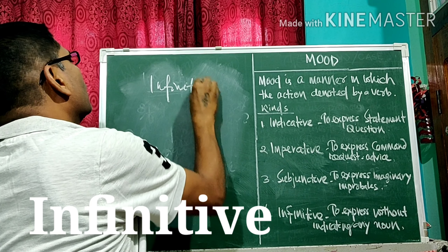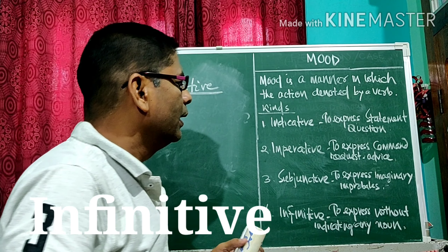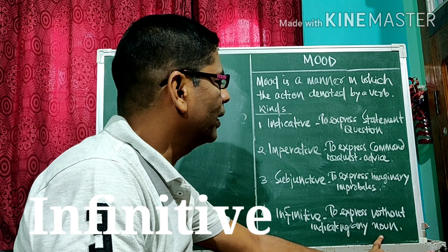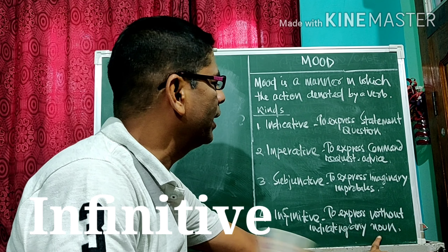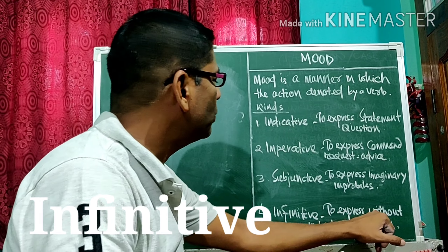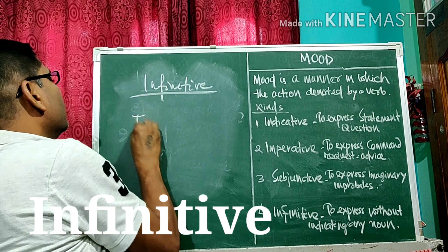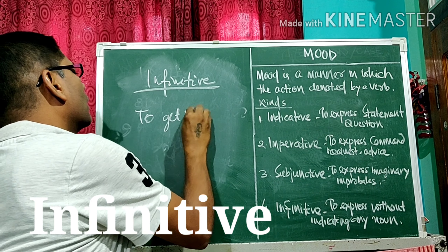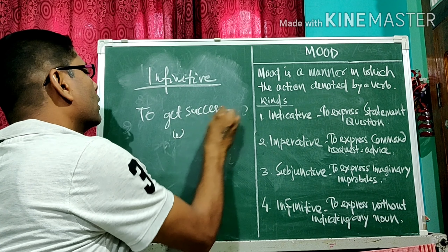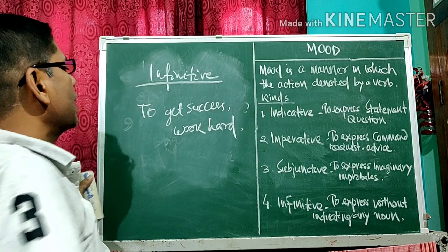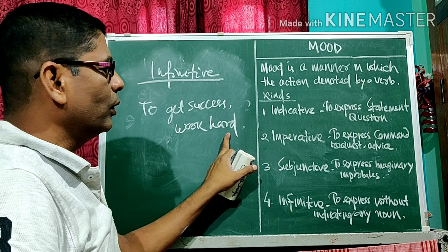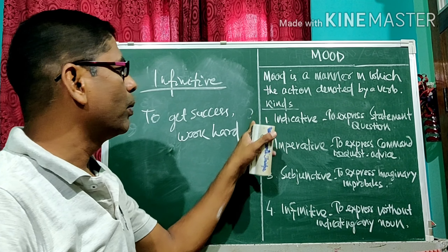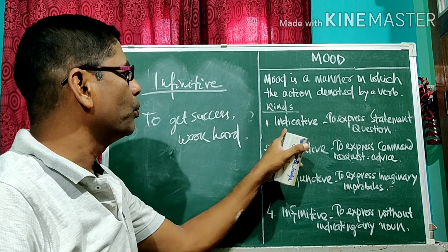Number four: infinitive mood. In the infinitive mood, you cannot get a subject. It is used to express something without indicating any noun — no person, place, thing, or name. For example: 'To get success, work hard.' Here you cannot get any noun. That is the infinitive mood — to express without indicating any noun.